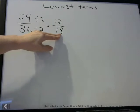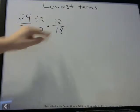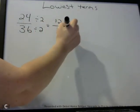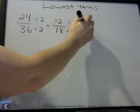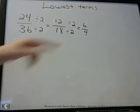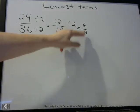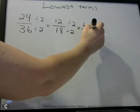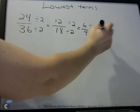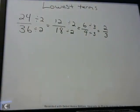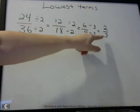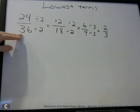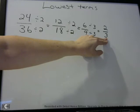So now we look at 12/18 — is this in lowest terms, or can we divide something into both numbers evenly? Well, 12 and 18 can both be divided by 2: 12 divided by 2 is 6, and 18 divided by 2 is 9. Now we have 6/9 — is that in lowest terms? Both 6 and 9 can be divided by 3: 6 divided by 3 is 2, and 9 divided by 3 is 3. Now we're at 2/3. There's no number that divides evenly into both 2 and 3, so the answer in lowest terms is 2/3. So 24/36 is the same as 2/3.